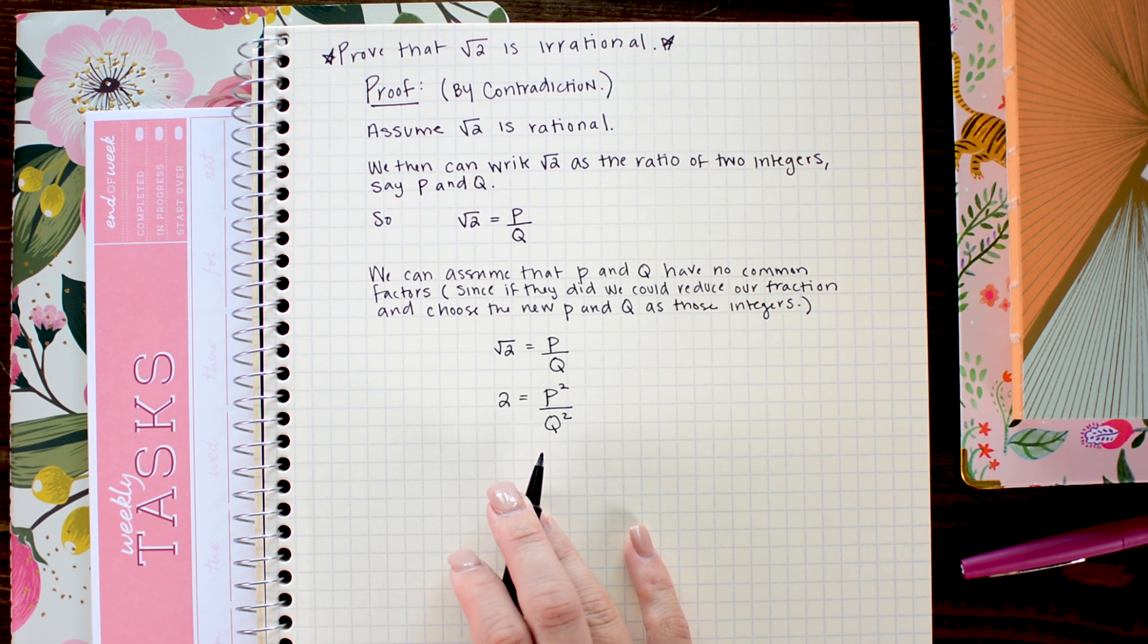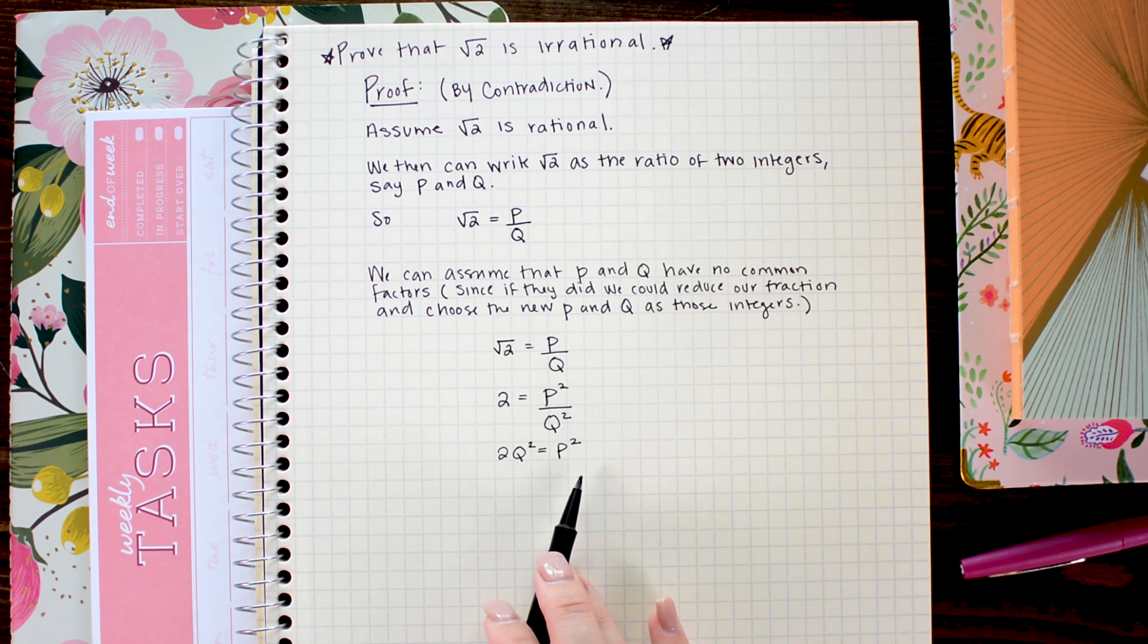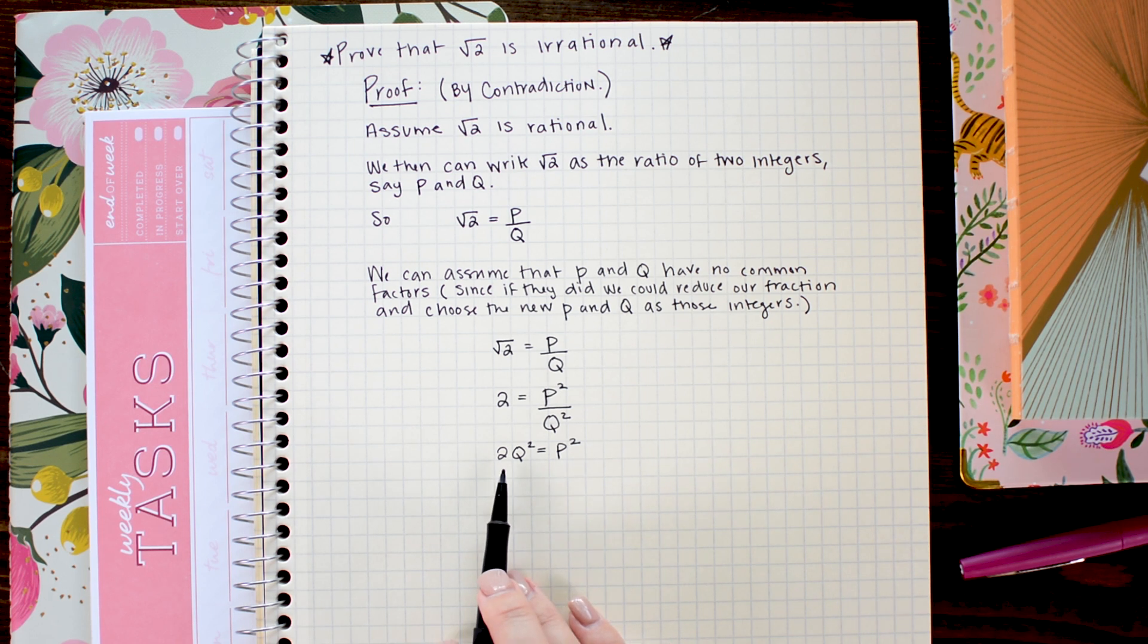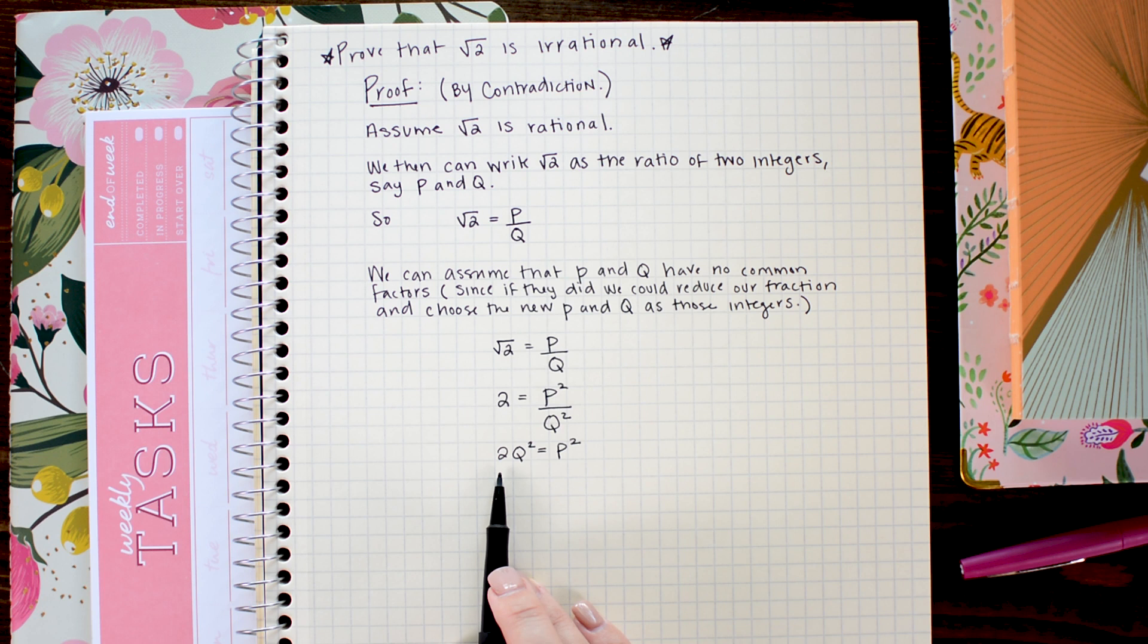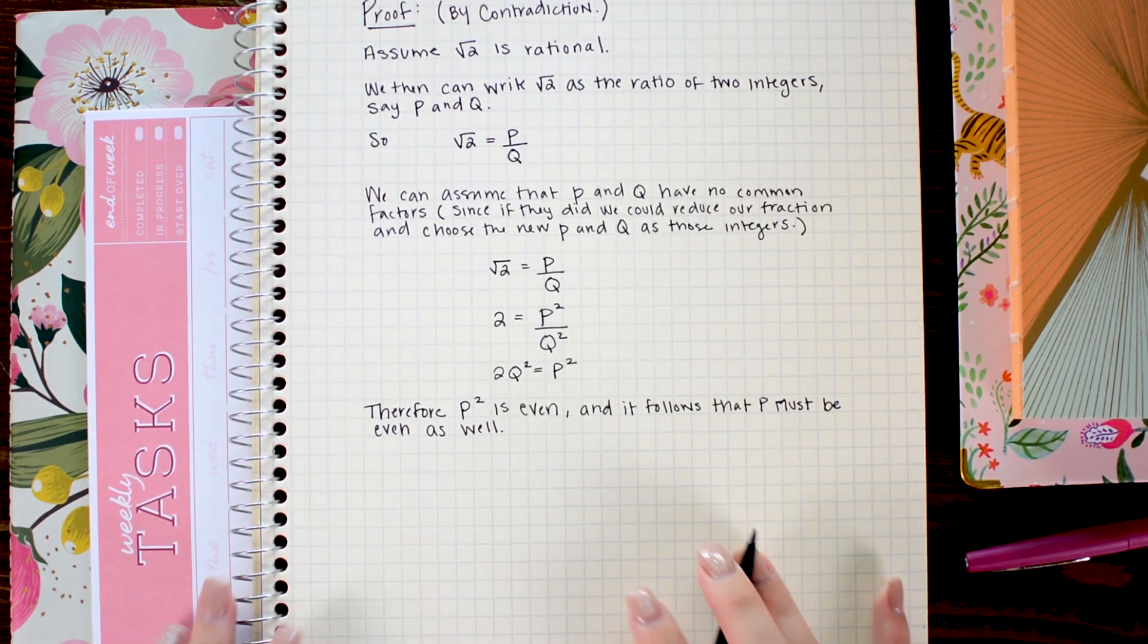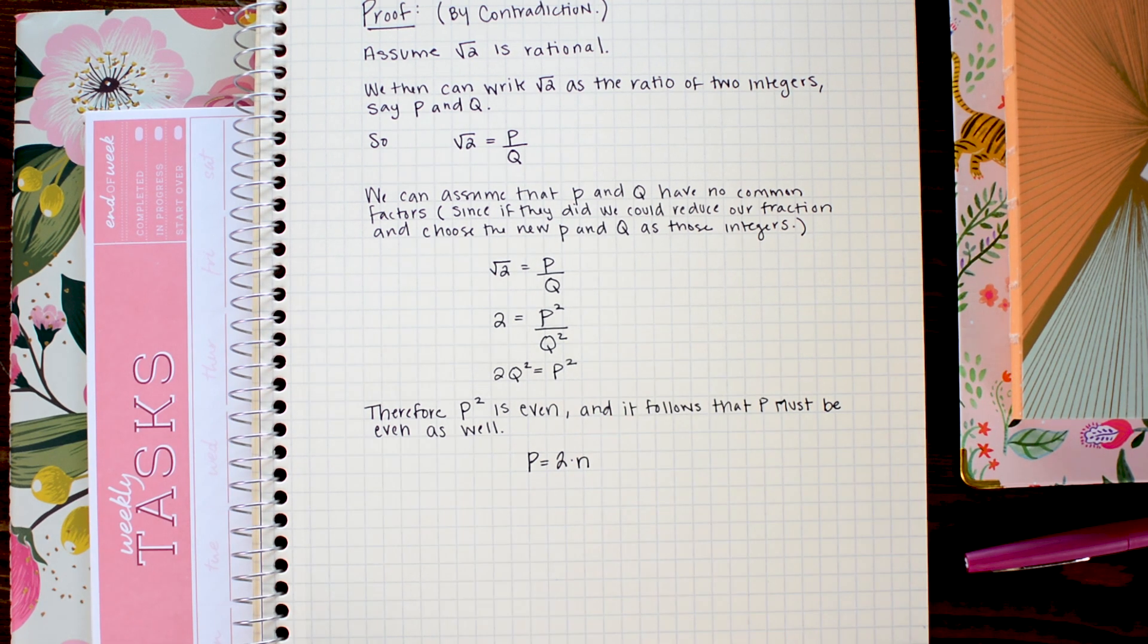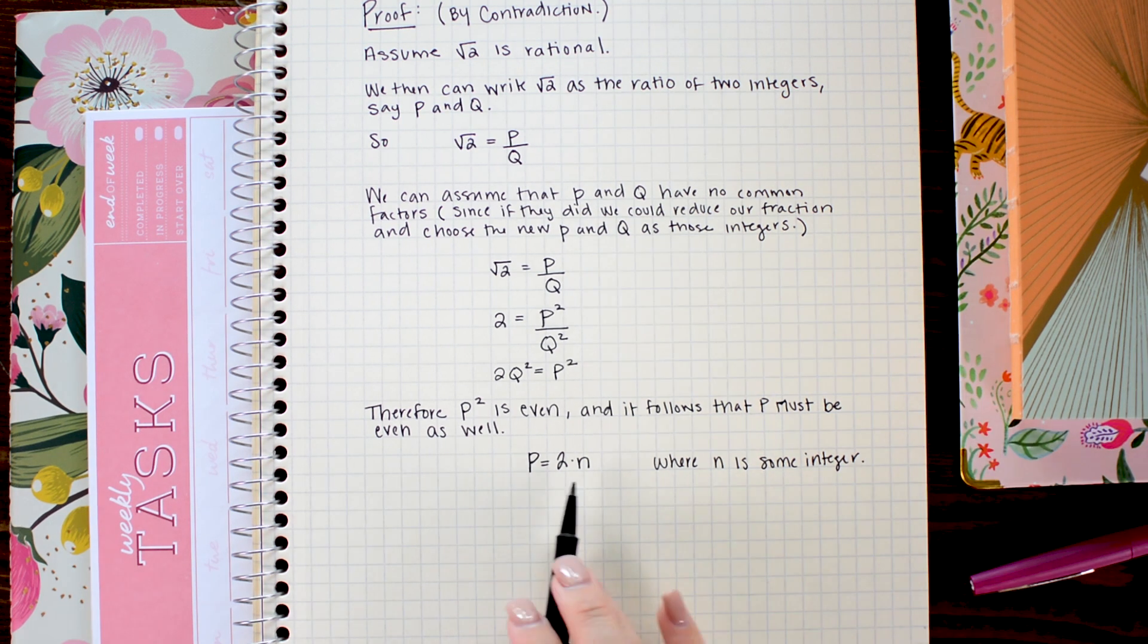So if you're doing these proofs on your own and you're not getting them on the first shot, that's okay because usually you're doing a lot of scratch work to figure out the correct steps. I've already figured out these steps, so you're not seeing the scratch work. But that is how I know to do this next. So now I have 2q squared equals p squared. So at this point you may notice that p squared is an even number because it is equal to 2q squared and this factor of 2 will make it even. So I'm going to say that p squared is even. And if p squared is even, then p must be even as well. So because p is an even number, we can say that p equals 2 times n where n is an integer. And that's just the definition of even.